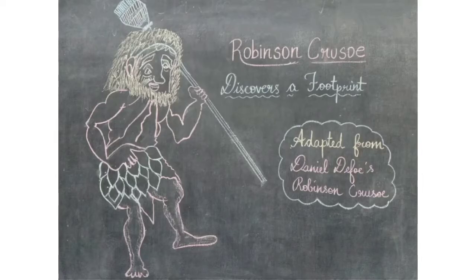Robinson Crusoe had been living alone on an island for a long time because his ship had been destroyed by the sea. He wanted company to overcome his loneliness.